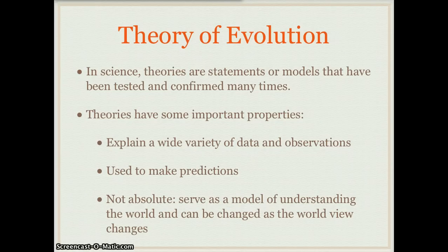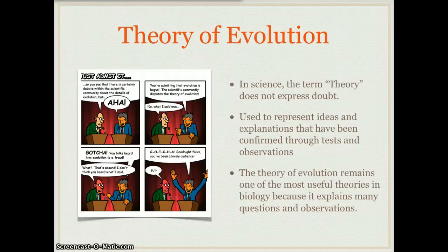Theories are used to make predictions. For example, the theory of gravity helps predict that when you throw a ball up it will come down. And theories are also not absolute — they serve as a model of understanding the world around us, but they can be changed as the worldview changes. In science, the term theory does not express doubt. There is no doubt surrounding the theory of evolution.